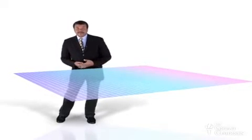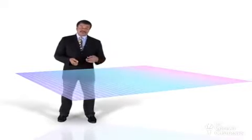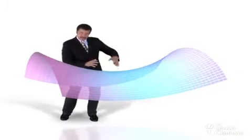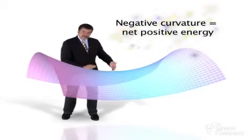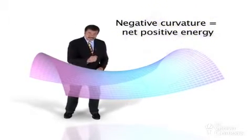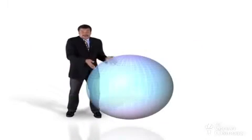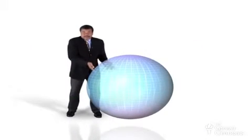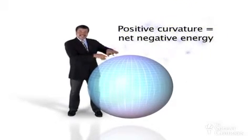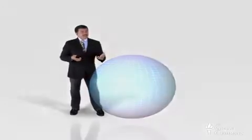Flat. Now, that's not the only shape the universe could have had. The universe could have negative curvature, and if it did, that would have a saddle shape, and a negatively curved universe has a net positive energy. The universe is neither a spherical shape — the shape of a ball — that would be positive curvature having net negative energy.